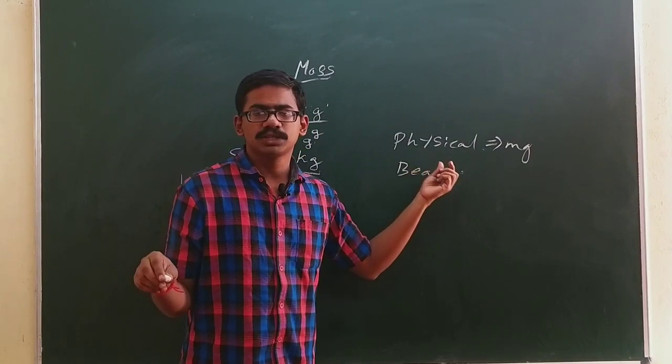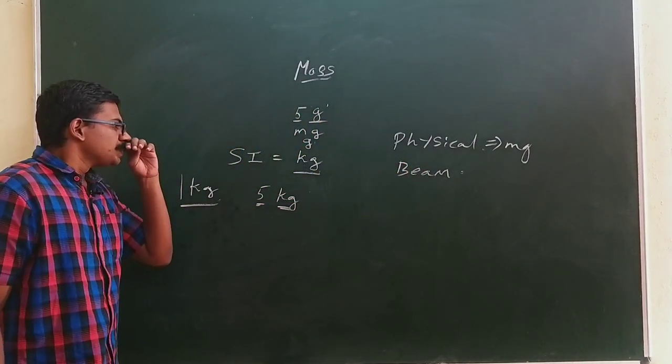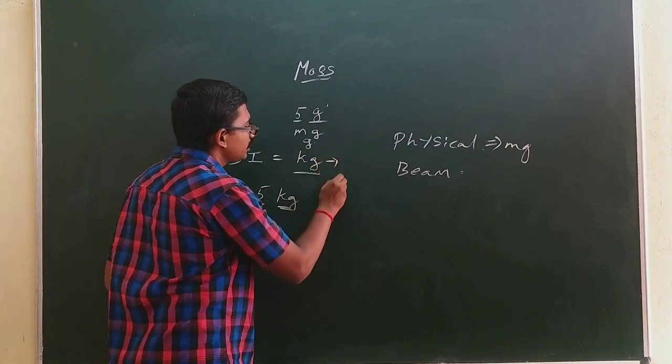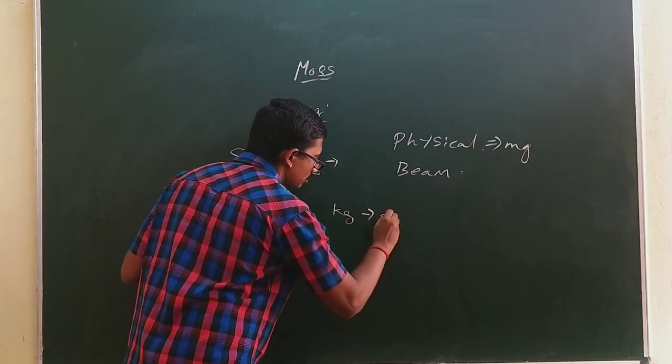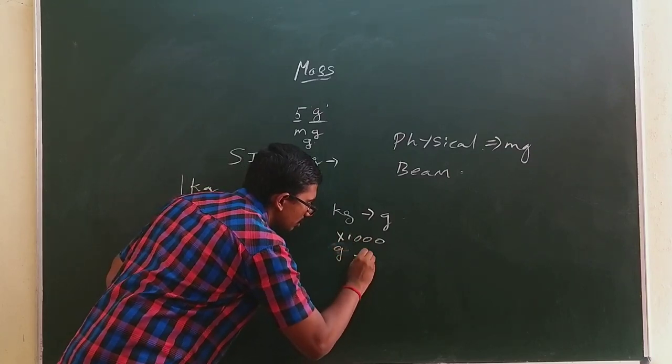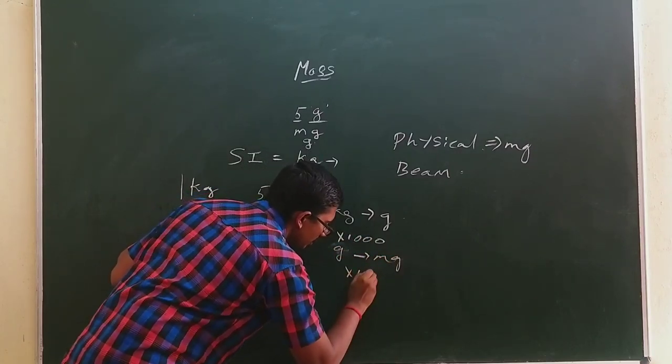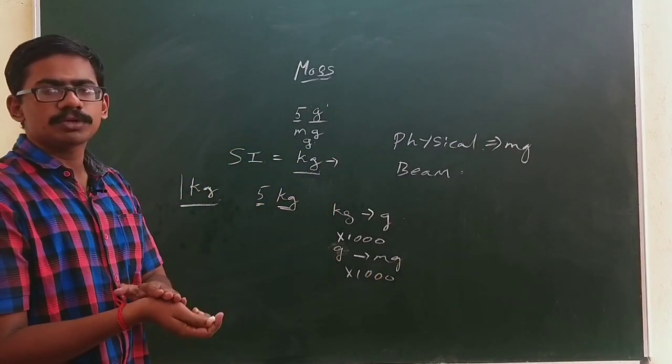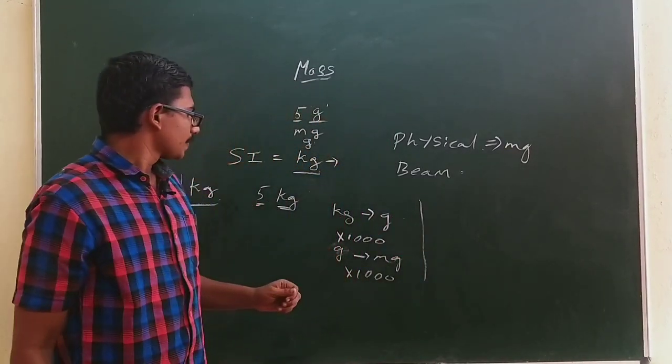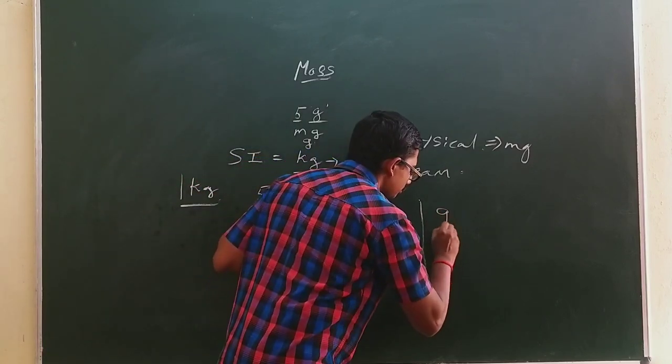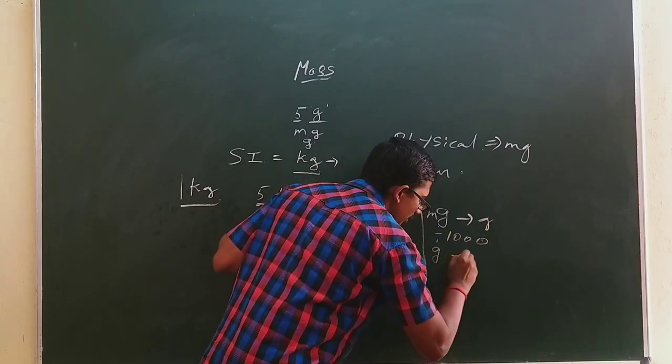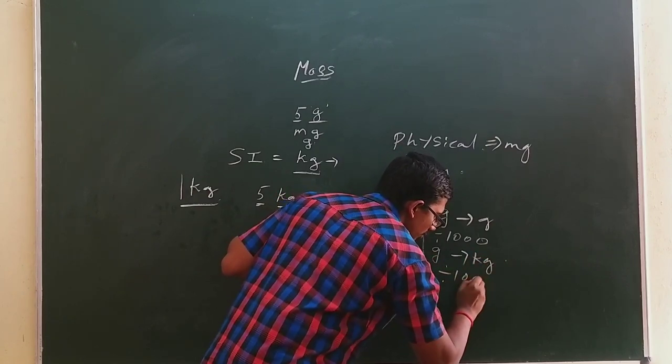Let's see the conversions. If you convert kilogram to gram, what do we do? Multiply by 1000. That's a kilogram to gram, then gram to milligram again multiplied by 1000. If you convert milligram to kilogram, first step: milligram to gram - divide by 1000. Again, gram to kilogram - again divided by 1000.